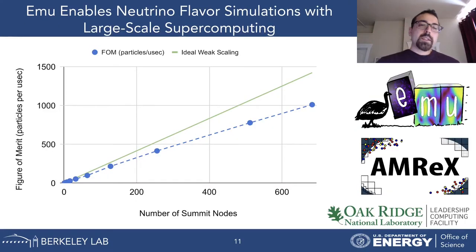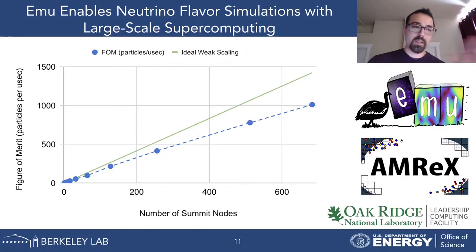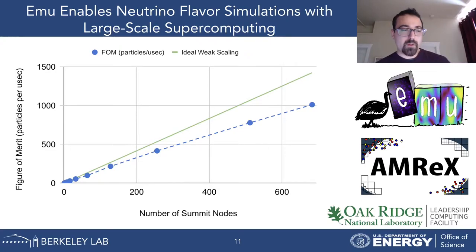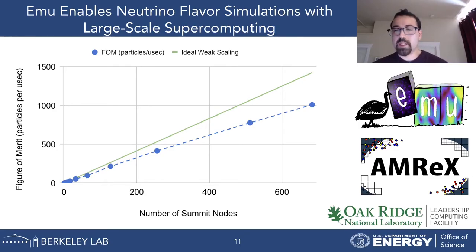This enables us to simulate neutrino flavor directly using large-scale supercomputing, as on the Summit supercomputer at OLCF, based on GPUs. We show weak scaling for EMU, measuring particles time-stepped per microsecond of wall time as a function of number of nodes on Summit, scaling up to a 1024-cubed domain on 683 nodes with just over 4000 GPUs. Ideal scaling is shown in green, and we don't quite reach it because we have three synchronous communication steps per time-step: summing ghost cells, copying back to ghost cells, and redistributing particles to new grids. Nevertheless, we demonstrate effective use of thousands of GPUs for large-scale simulations.